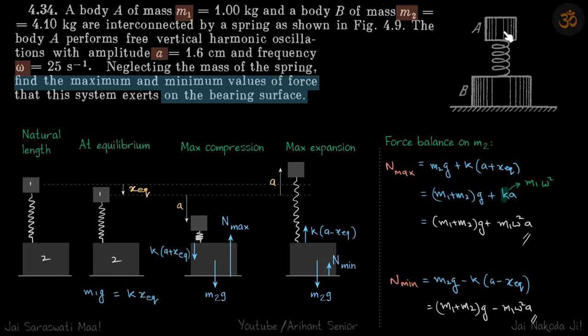We have two masses connected with a spring. The top mass is performing SHM with given amplitude a and frequency omega. We need to find the normal reaction at the bottom—what is the maximum and minimum normal reaction.